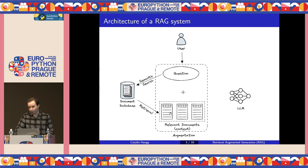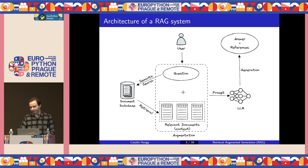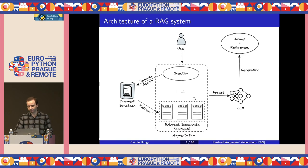The next step is to append the retrieved documents to the initial question and create a larger prompt which contains both the question and the potential answer. This is called augmentation and it's basically a form of prompt engineering. Finally, we give this enhanced prompt to the LLM, which will generate an answer based on the retrieved information and not on its original training data. This is essentially how RAG allows an LLM to answer questions about topics it hasn't seen during training.